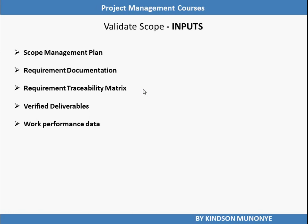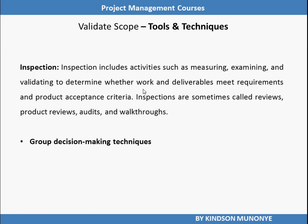Let's take a look at the tools and techniques of Validate Scope. There are just two tools and techniques. The first one is Inspection. Inspection includes activities such as measuring, examining, and validating to determine whether work and deliverables meet requirements and product acceptance criteria. Inspections are sometimes called reviews, product reviews, audits, and walk-throughs. Another tool and technique used for Validate Scope is Group Decision Making Techniques. These techniques are used to reach conclusions when the validation is performed by the project team and other stakeholders.